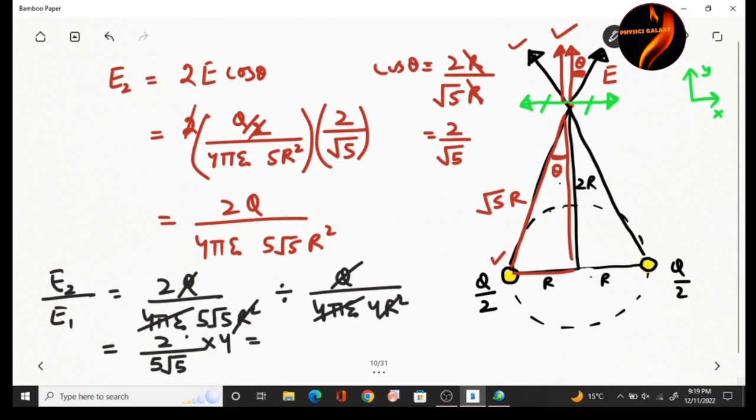So the ratio equals 2 divided by 5 root 5.